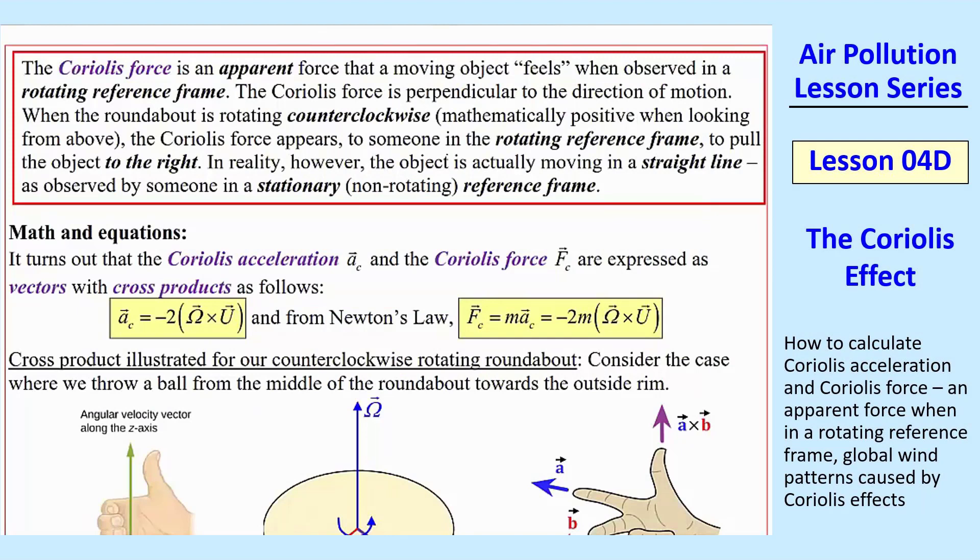I typed up this summary statement here that I'll just read. The Coriolis force is an apparent force that a moving object feels when observed in a rotating reference frame. It's perpendicular to the direction of motion. So when this roundabout is rotating counterclockwise, the Coriolis force appears. This is to someone in the rotating reference frame, not the stationary reference frame. It appears to pull the object to the right. So in reality,